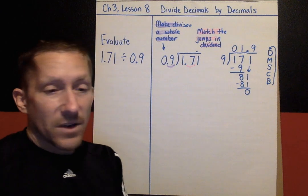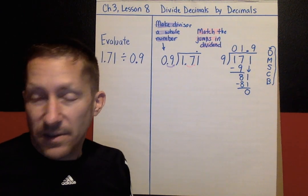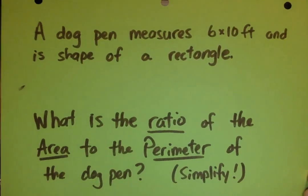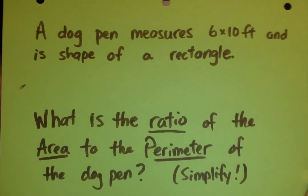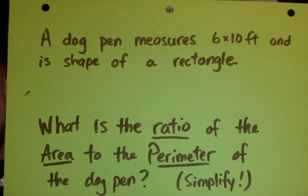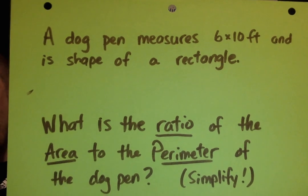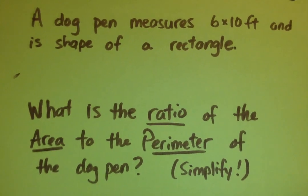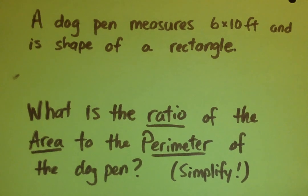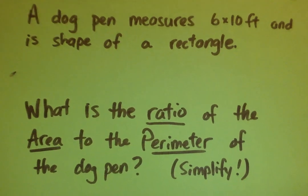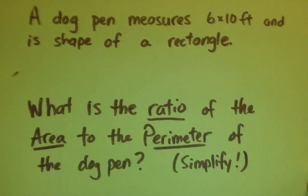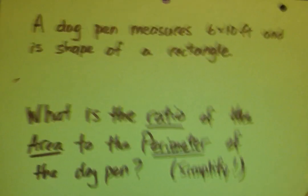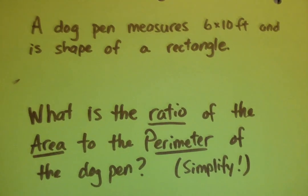All right, let's look at one more example. But before I give you the second example, I'm going to give you today's hidden treasure. And here it is. So today's hidden treasure is this question: A dog pen measures 6 feet by 10 feet and is in the shape of a rectangle. What is the ratio of the area to the perimeter of the dog pen? And your answer must be simplified. Okay, so there's your hidden treasure. We'll cover that after the test, the first lesson in chapter 4. We will go over this hidden treasure.